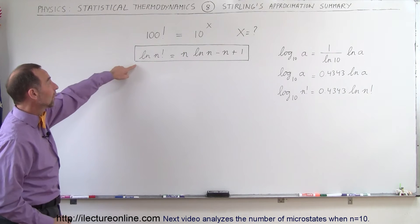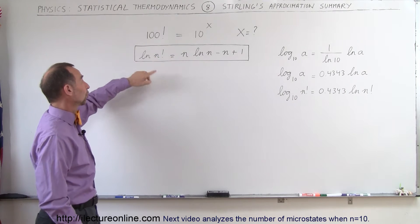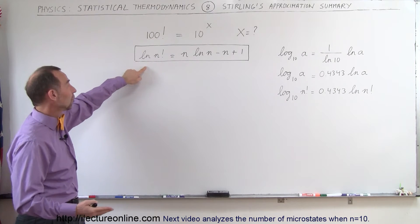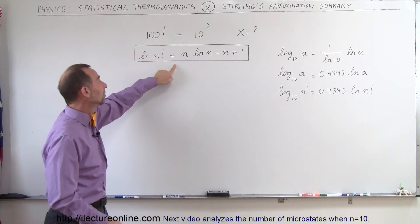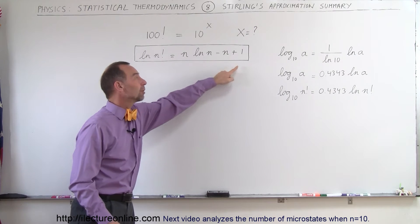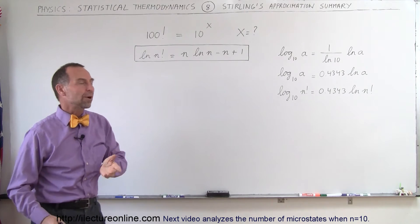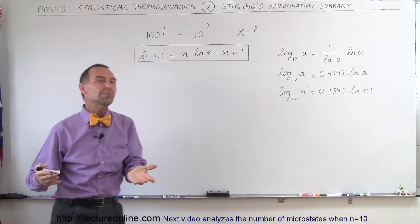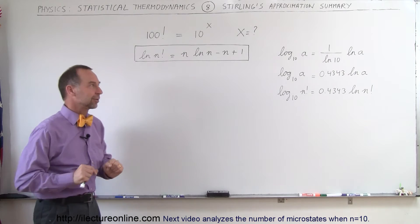Here's the equation: the natural log of n factorial, where n can be any number, is equal to n times the natural log of n, minus n, plus 1. Notice that most approximations leave off the plus 1, but keeping it there makes it a little bit more accurate.